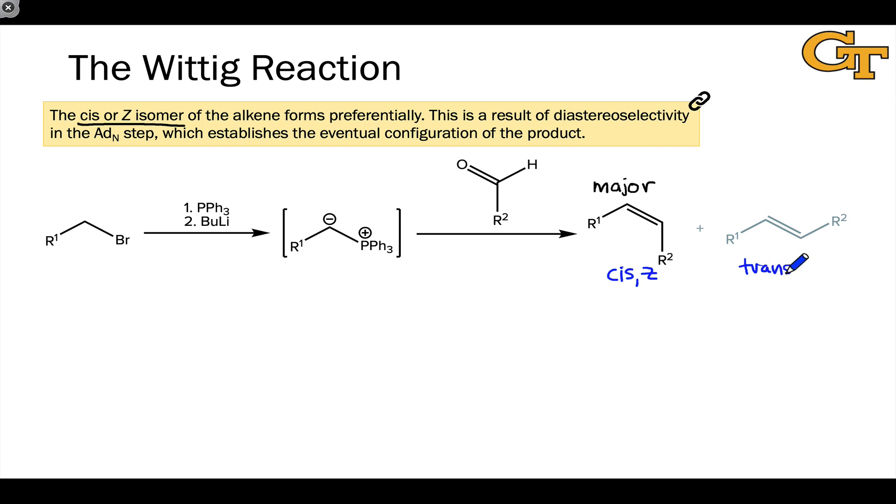The trans or E isomer is formed in a much smaller amount and in some cases is not observed at all.